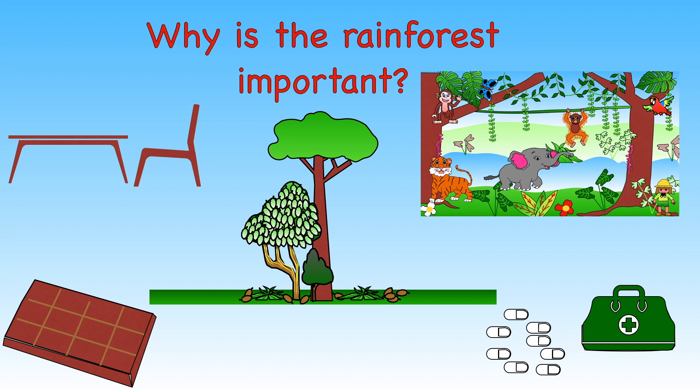Some of our food comes from the rainforest. Did you know that cocoa beans used to make chocolate come from the rainforest? It also gives us timber to build furniture and to make paper. Trees also store large amounts of carbon, and if rainforests are destroyed and left to rot, carbon is then released as carbon dioxide, which is a greenhouse gas and can make global warming even worse.